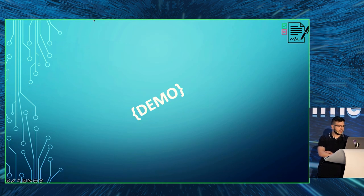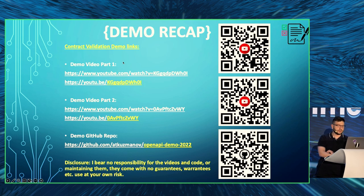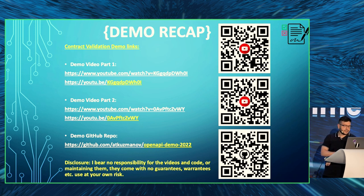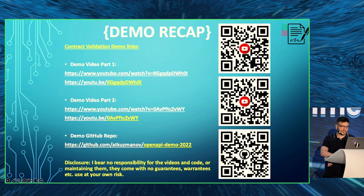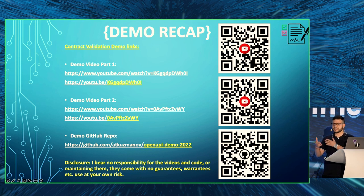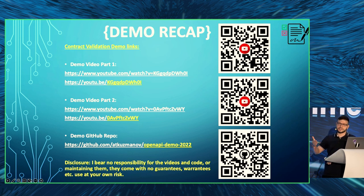Demo recap: we used an API contract — an OpenAPI spec file — to generate a back-end in Java and Spring Boot, and a front-end in Angular and JavaScript. We added a little bit of glue code to make the code bases talk to a database and give some design to the front-end. And we showed how tests fail if your code breaks the API contract, or if the contract changes and your code hasn't implemented the changes yet. Pretty powerful stuff.